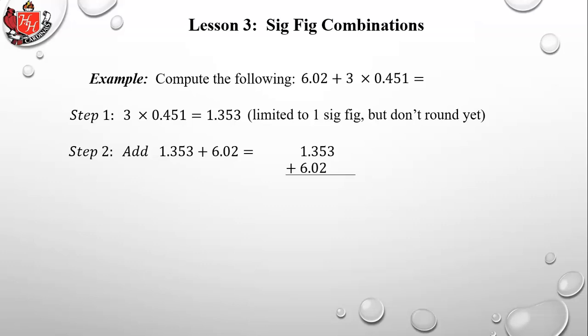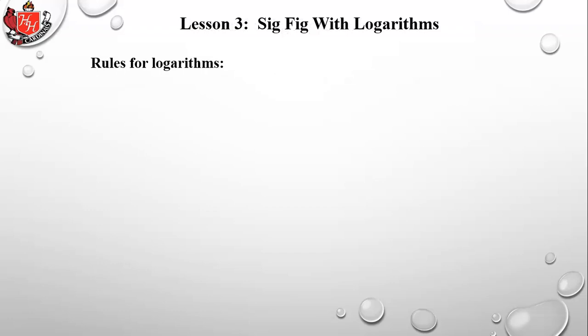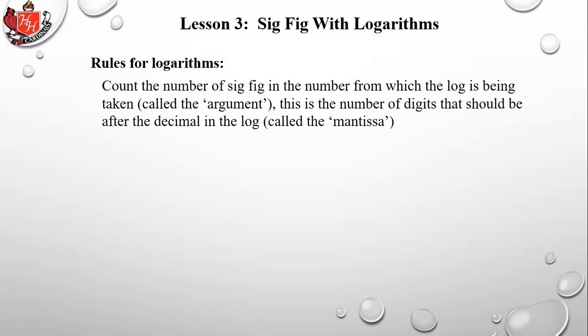Now add 1.353 + 6.02. Drawing the line, you get 7.373; the 3 rounds the second 7 back down to 7, giving 7.37 from the addition rule — three significant figures. But going back to the multiplication, we're limited to one significant figure, so the final answer is simply 7.